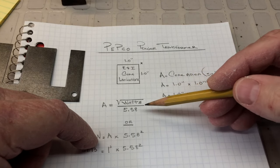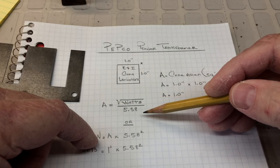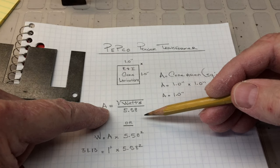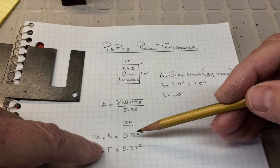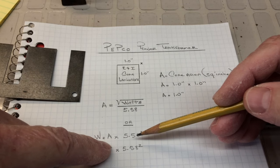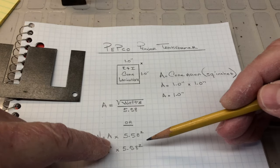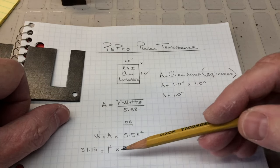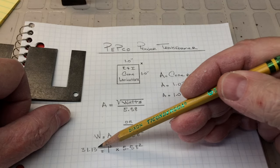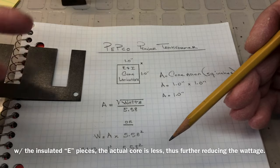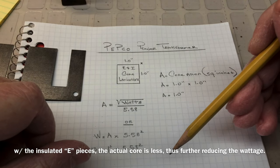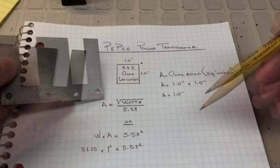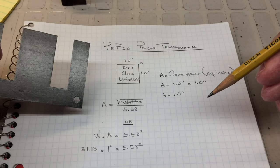But you can take the square root of the watts and divide it by 5.58 and that will give you the area or we can just rearrange the formula for watts. We can take the area again in square inches times 5.58 squared and you can see doing the math we come up with about 31 watts would be the capability of this particular transformer. So somewhere around 30 watts or so. Very small power transformer for this receiver.